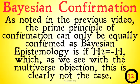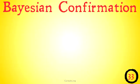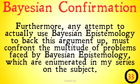In terms of Bayesian confirmation and Bayesian epistemology, as we noted in the previous video, the prime principle of confirmation can only be equally confirmed as Bayesian epistemology if H2 is equal to not-H — which, as we see with things like the multiverse objection, is clearly not the case. There are a huge number of other hypotheses that are not H2, so it seems very difficult to realistically compare not-H and some particular H. This doesn't hold up to the higher standards of Bayesian epistemology and Bayesian confirmation theory. Furthermore, any attempt to use Bayesian epistemology to back up this argument must confront the multitude of problems faced by Bayesian epistemology, which are enumerated in my series on the subject.